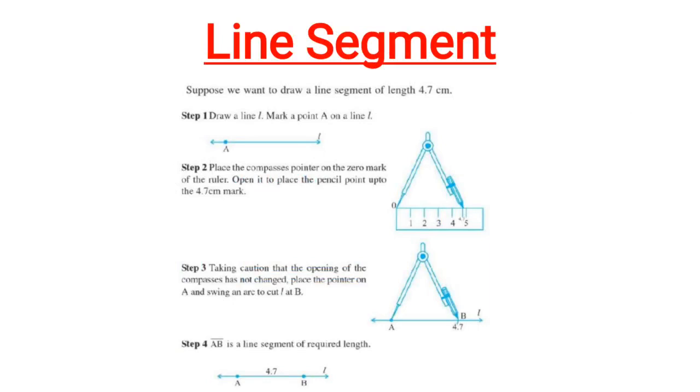Next we shall learn about line segment. We know that line segment has two end points and its length can be known. Suppose we want to draw a line segment of length 4.7 cm, then we will have to follow the following steps of construction.